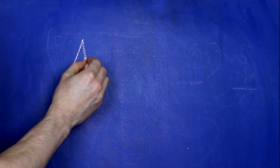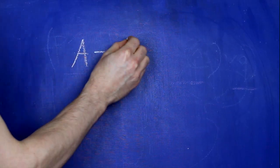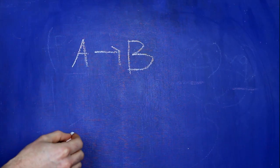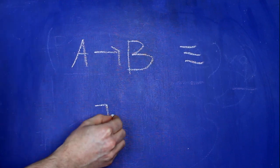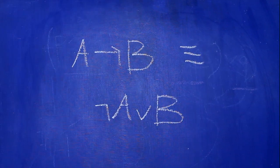Step one. We have to eliminate all the arrows. We do that by converting 'if A then B' into the equivalent 'not A or B'.